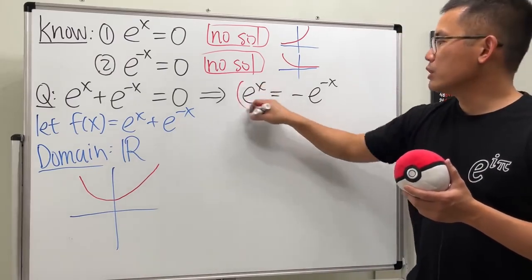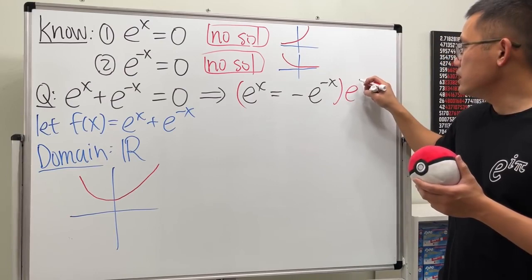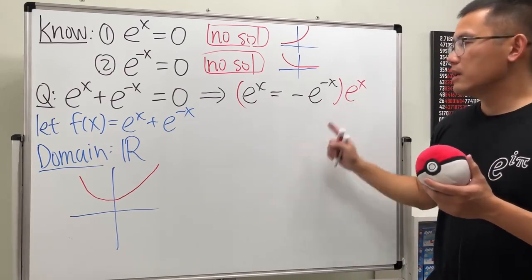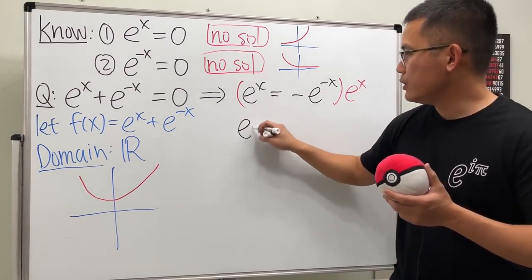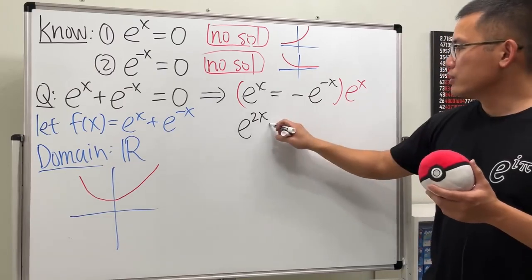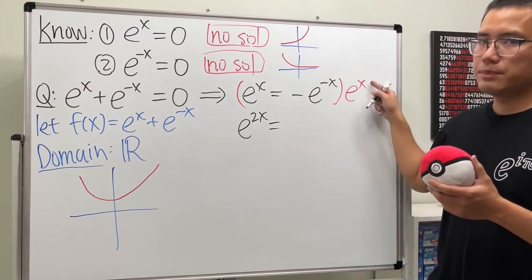Right here let's get rid of the negative exponent by multiplying this equation with e^x. This times this will give us e^(2x) and then this times that will just give us -1 because the exponents add to 0.